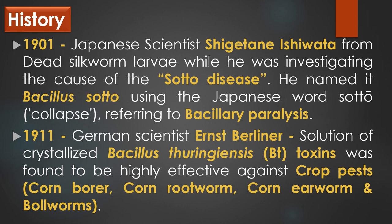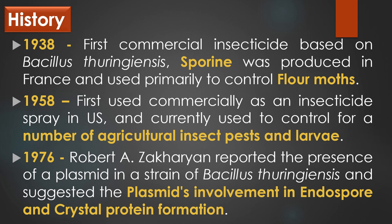The first commercial insecticide based on Bacillus thuringiensis, the Sporine, was produced in France in 1938 and used primarily to control flour moths. In the United States, the Bacillus thuringiensis product was first used commercially as an insecticide spray in 1958, and several different strains of the bacterium are currently used to control a number of agricultural insects and their larvae. Finally, in 1976, Robert A. Starkrain reported the presence of plasmid in a strain of Bacillus thuringiensis and suggested the plasmid's involvement in endospore and crystal protein formation.